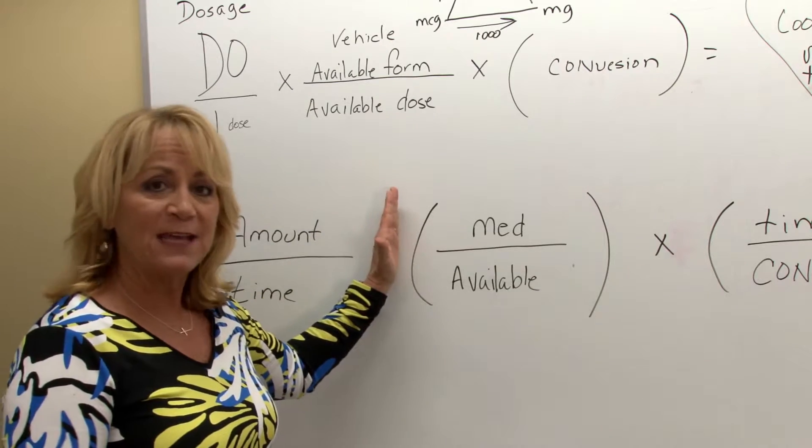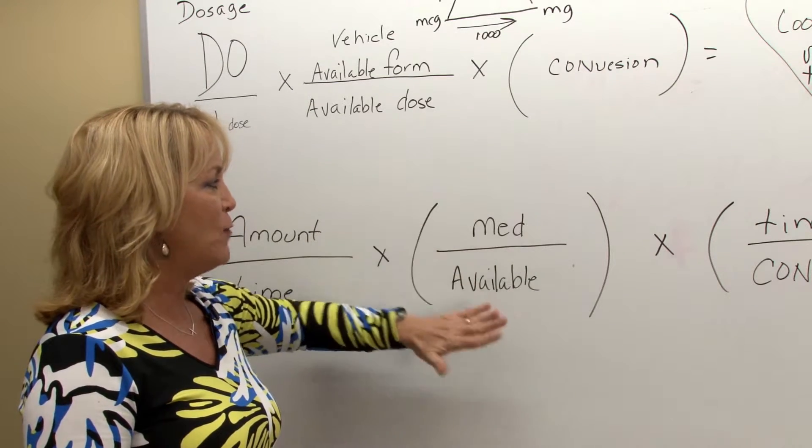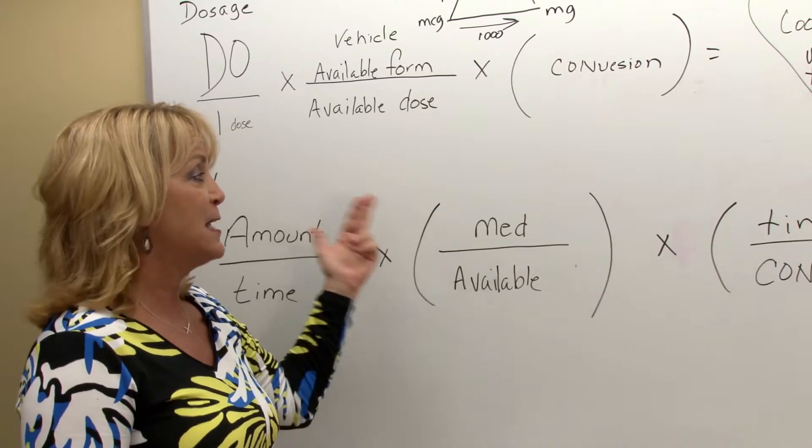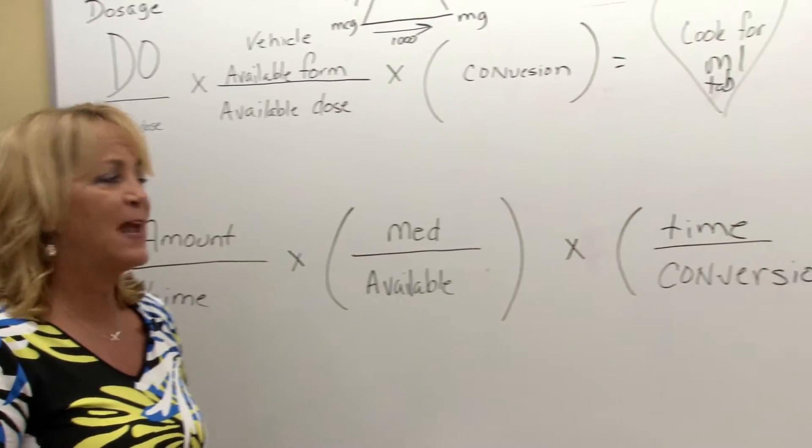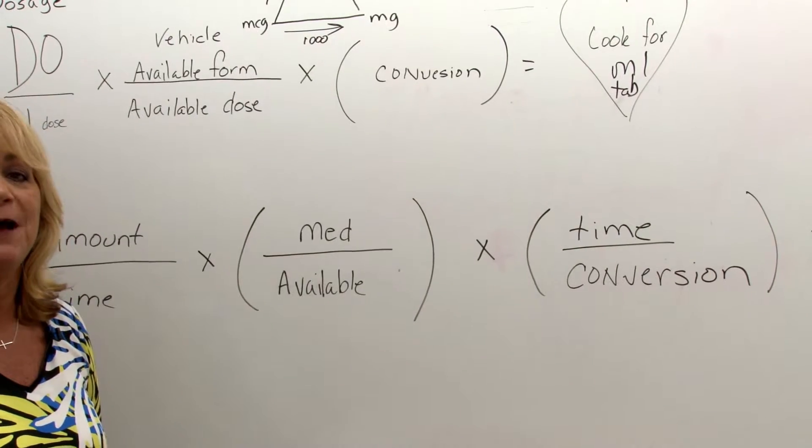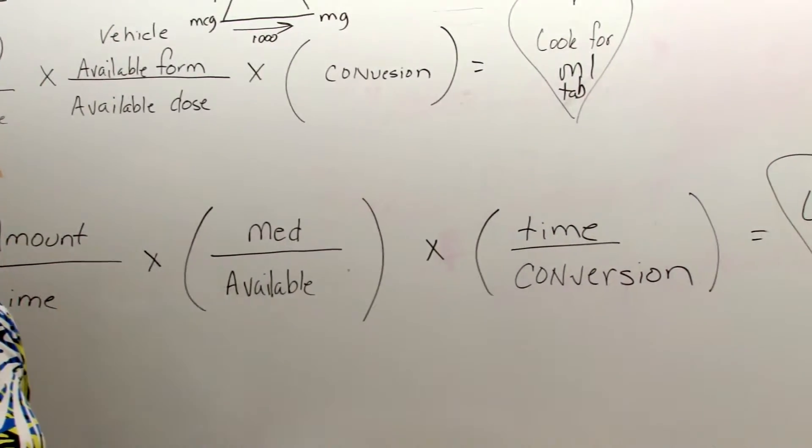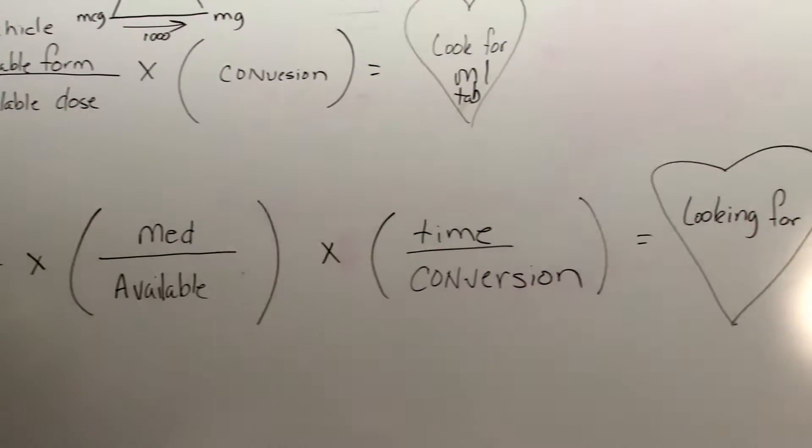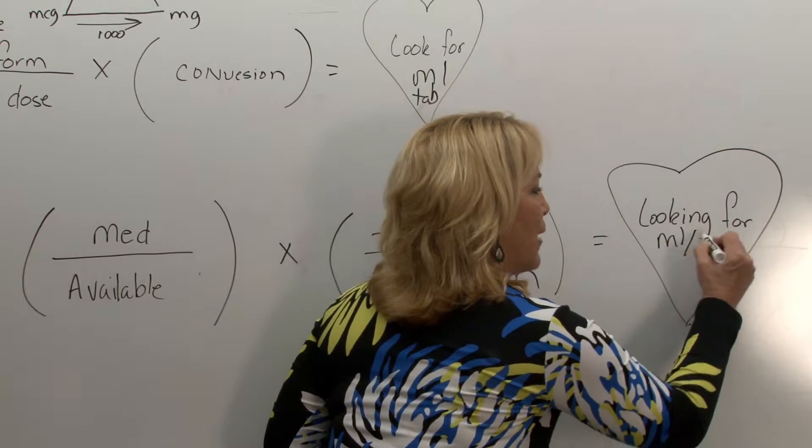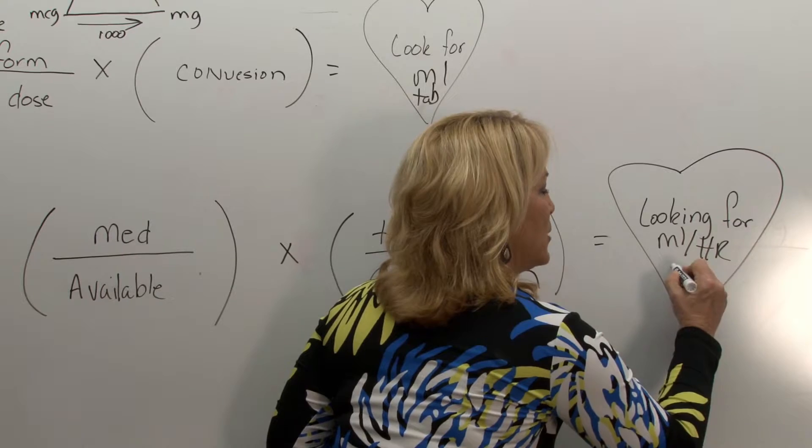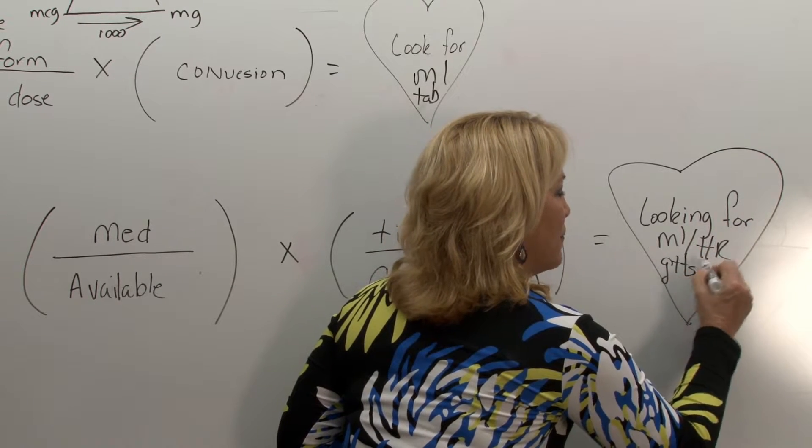And then again we have a second part. We have the med over the available, whether it is mils, whether it's drops per minute. And then we might have to have a time conversion. If we're talking about hours to minutes, that's usually what's there. But again, always start it off for what I'm looking for. Am I looking for mils per hour? Or am I looking for drops per minute?